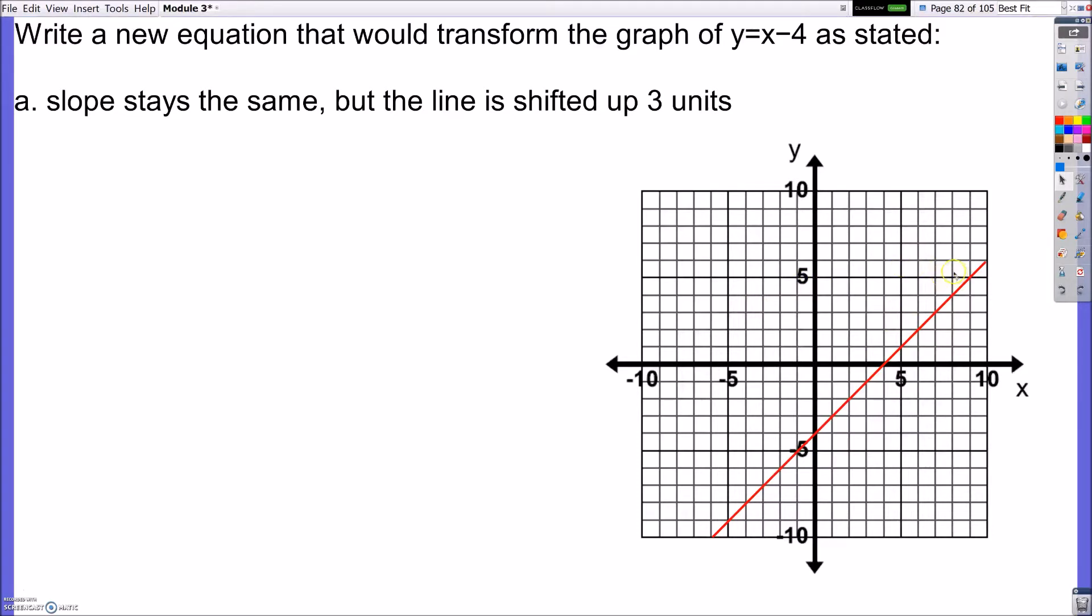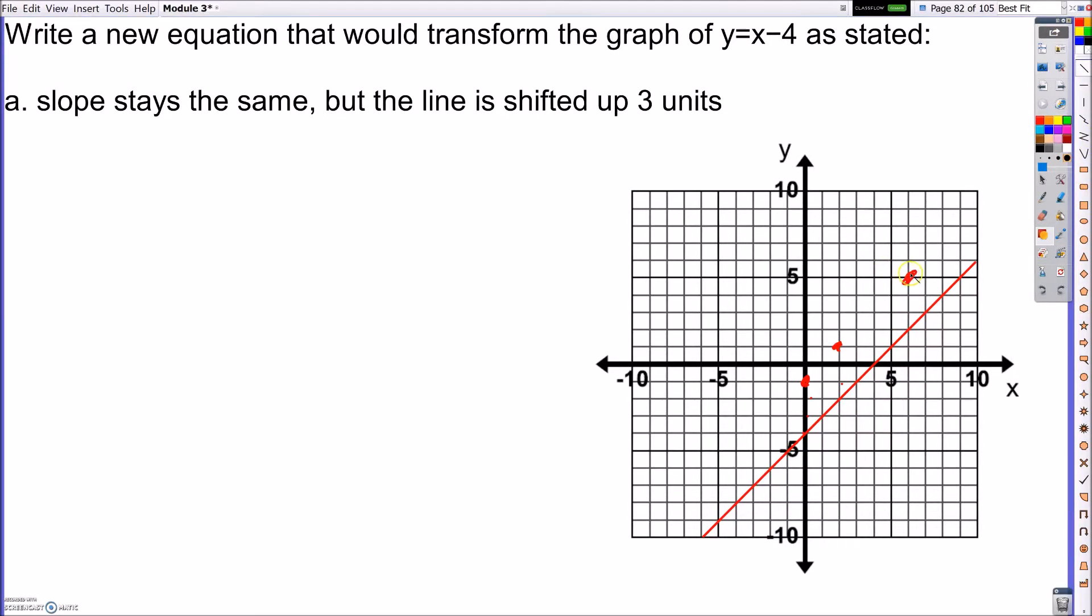It says I want us to shift the graph up 3 units. So if I just look at all these points and I go up 1, 2, 3. Here's this point, I go up 1, 2, 3. And I look at this point, I go up 1, 2, 3. You can see that I can start to visualize those points and what it would look like.